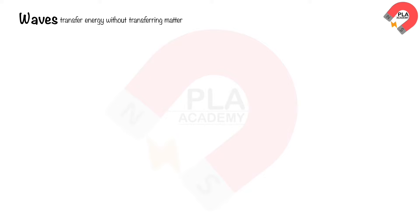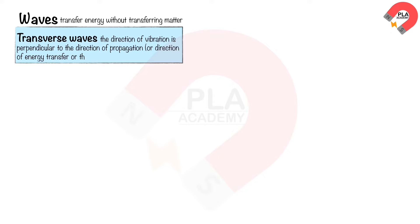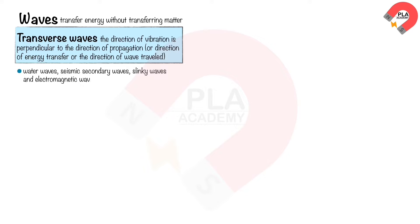Transverse waves. In transverse waves, the direction of vibration is perpendicular to the direction of propagation, or direction of energy transfer, or the direction of wave travel. Examples include water waves, seismic secondary waves, slinky waves, and electromagnetic waves.